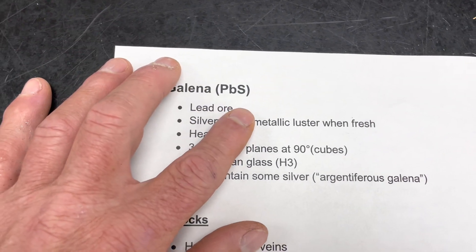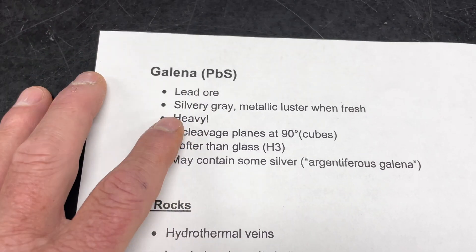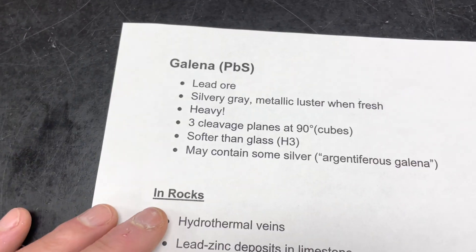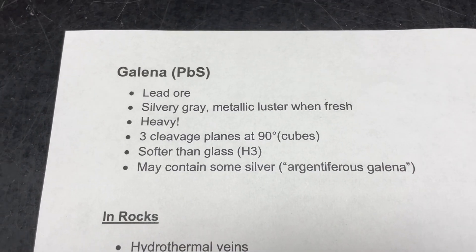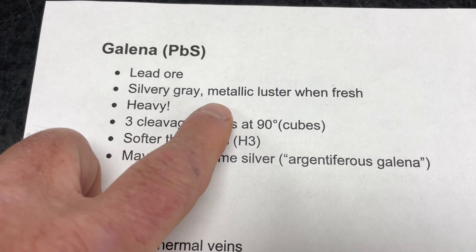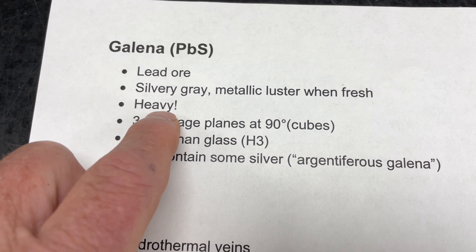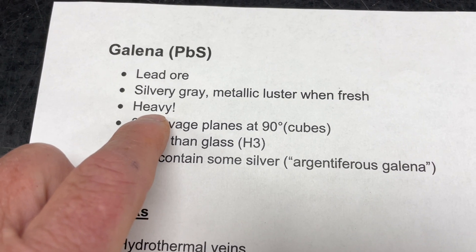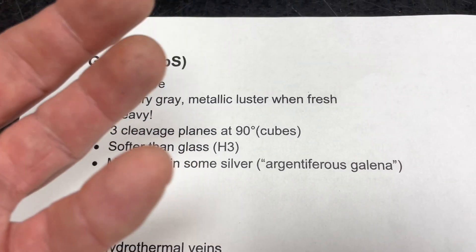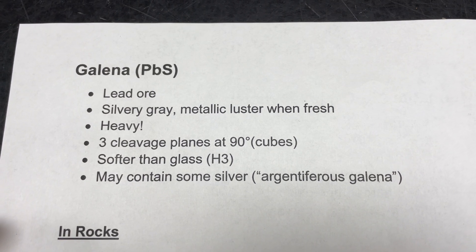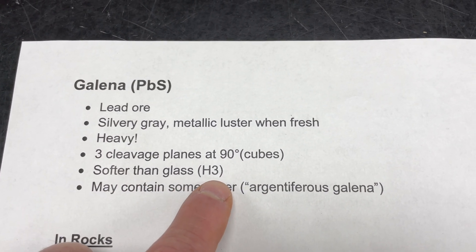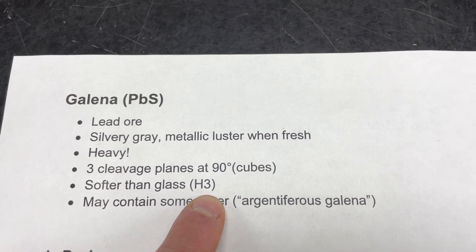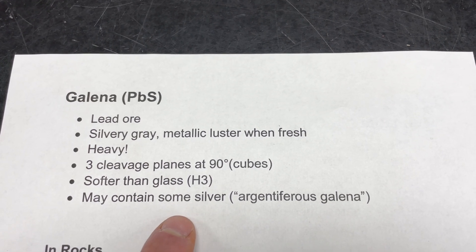Now we're going to look at a couple of sulfides — rather than oxygen, they contain a metal and sulfur. We'll start with galena, which is a lead sulfide mined for lead — it's why your car battery is so heavy. Galena is usually an obvious silvery-gray color with a metallic luster when fresh, and it's incredibly heavy with a high specific gravity. Just by the feel of a rock containing appreciable galena, you'll sense that density. A real characteristic is three cleavage planes at 90 degrees, so it makes cubes. It's actually softer than glass, so despite looking heavy and metallic and tough, it's a fairly soft mineral.